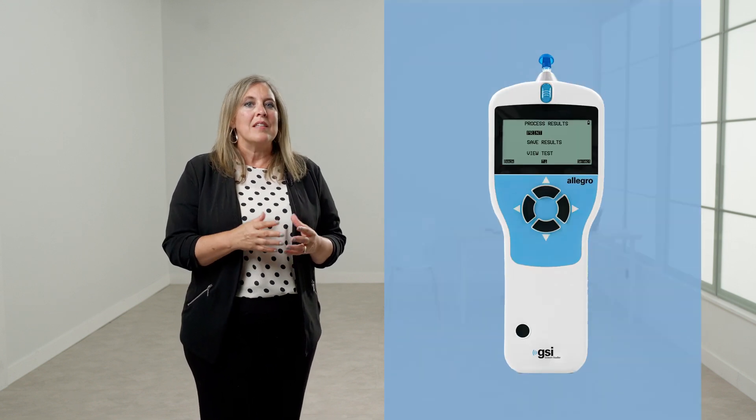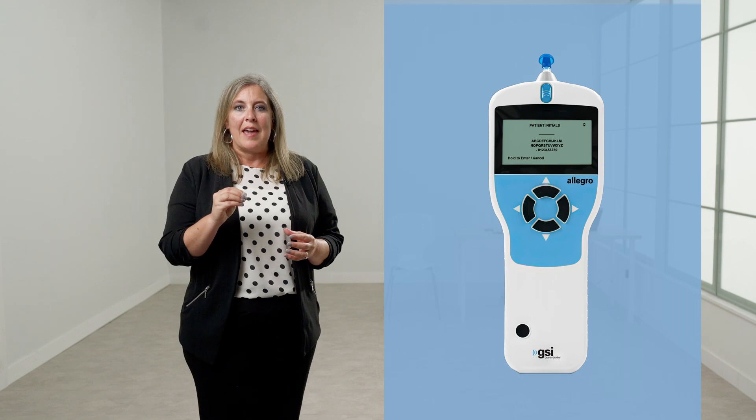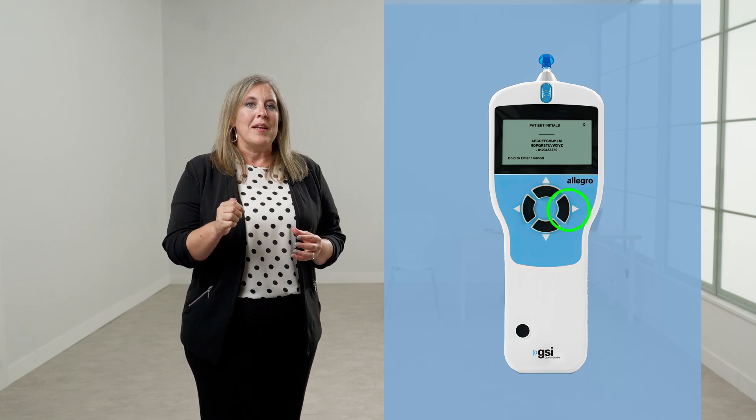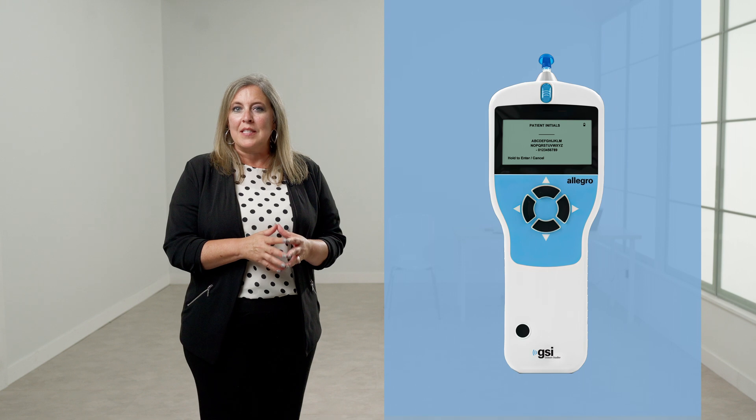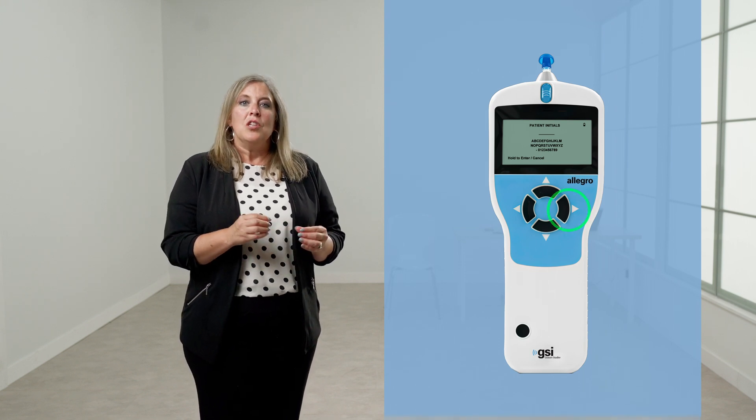To transfer the data from the Allegro to a computer, the results must be saved to the internal database on the Allegro. The Allegro will hold up to 32 patient records. To save the results of a test, select Save Results from the Process Results menu that is displayed on completion of a test. A three-character identifier is used for the record. This is also used as the reference for the patient's name on the printed record and for data transferred to a computer. To enter the identifier, use all four navigation buttons to select the characters. Press briefly and hold the right button to enter a character. Press and hold the left button to delete the last character. When all three characters have been selected, press and hold the right button to save the record. Use the Data Management option in the main menu to view and manage saved records.